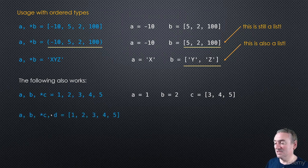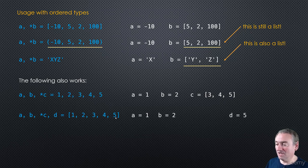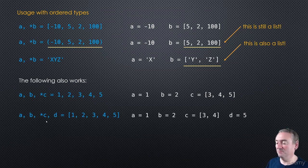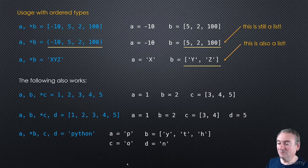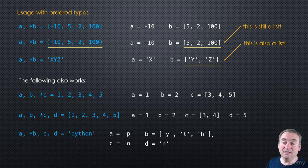We can also add elements after the star. In this case, A gets the first element, B the second, D gets the last element which is 5, and C gets the rest which is 3 and 4. It works with strings as well. For example: A is 'P', then C and D are the last two elements of the string, so B — the starred variable — gets the middle characters as a list.